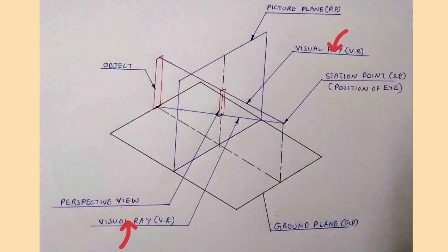We can see the imaginary visual rays joining the station point with any point on the object. The visual rays pass through the picture plane and converge at the observer's eye or station point.